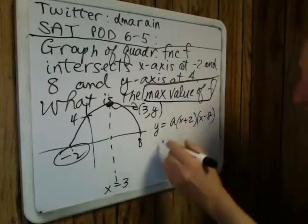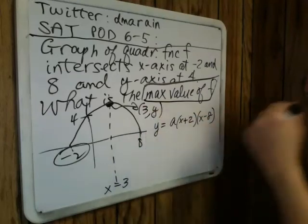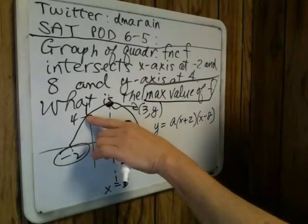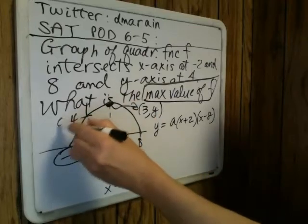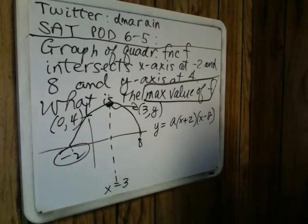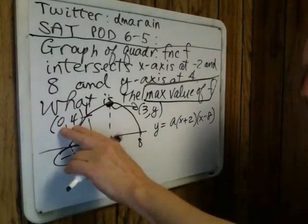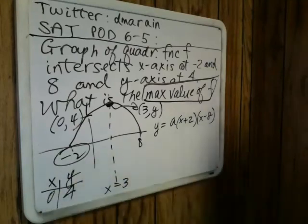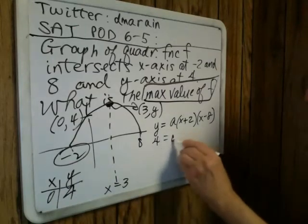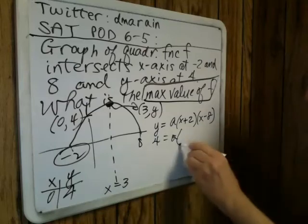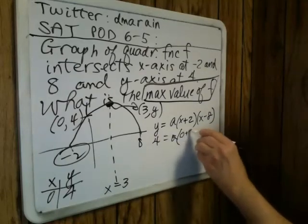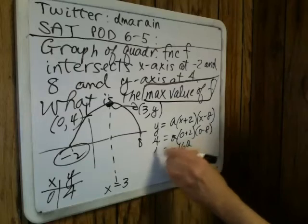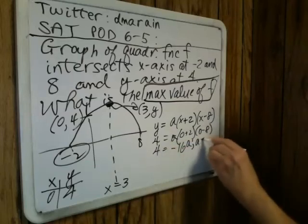Substituting in the ordered pair (0, 4) — we haven't used the y-intercept yet. The secret to all of these coordinate problems is that a pair of coordinates becomes an x and a y. So y is replaced by 4 and x is replaced by 0. We get a times (0 + 2) times (0 − 8), which gives us negative 16a equals 4. So a equals negative one-fourth.